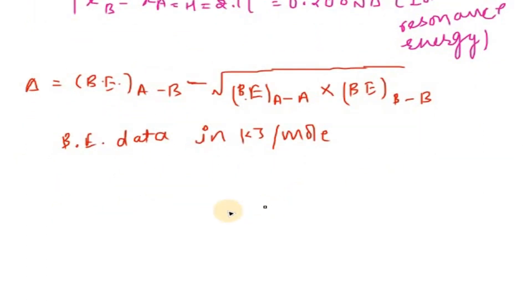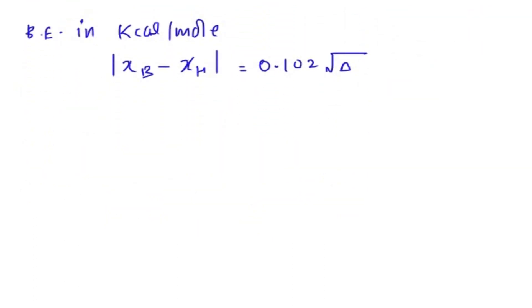When we are using the bond energy in kilocalories per mole, the value XB minus XH will be equal to 0.102 times the square root of delta. So we know how to calculate delta, but here we are putting the value of bond energy in kilocalories per mole.